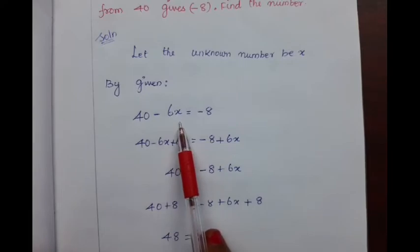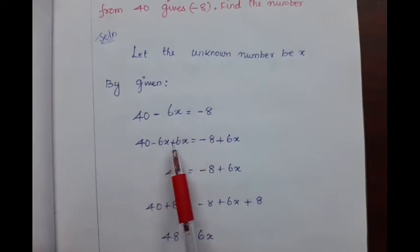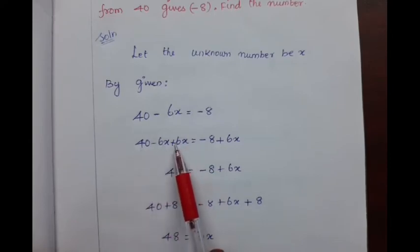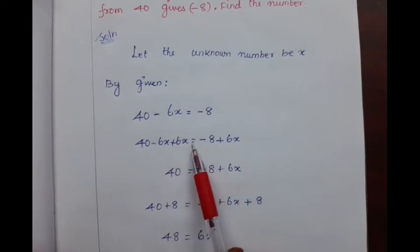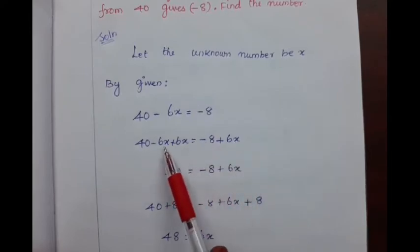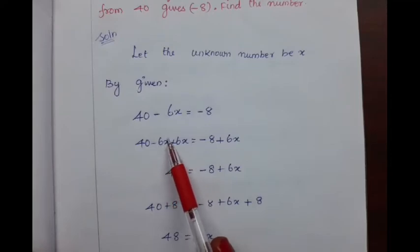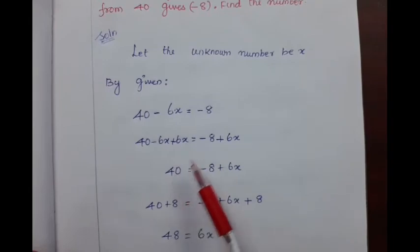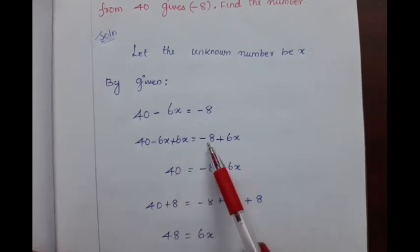To simplify this expression, we need to add 6x on both the sides. Therefore, we get 40 minus 6x plus 6x which is equal to minus 8 plus 6x. On the left side, minus 6x and plus 6x is getting cancelled. We get 40. On the right hand side, minus 8 plus 6x.